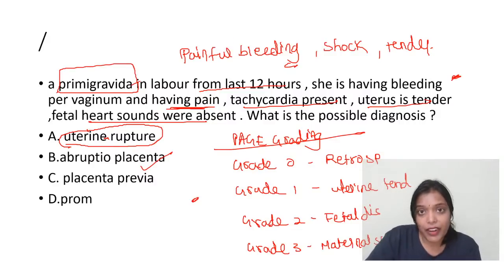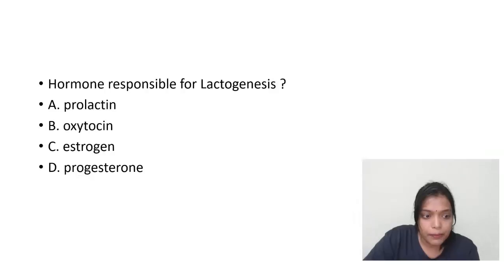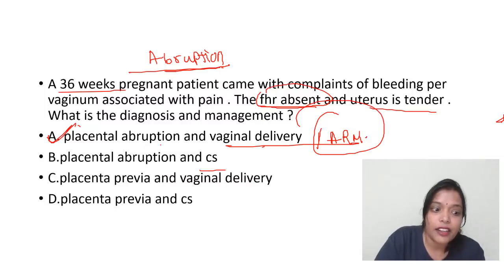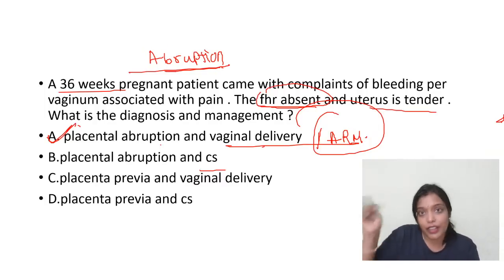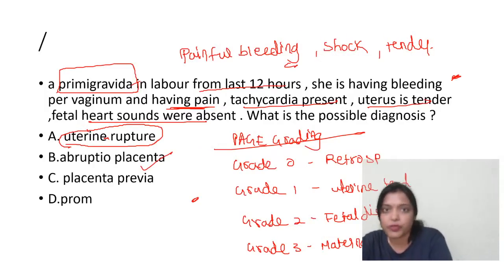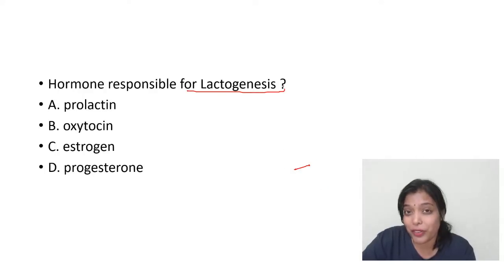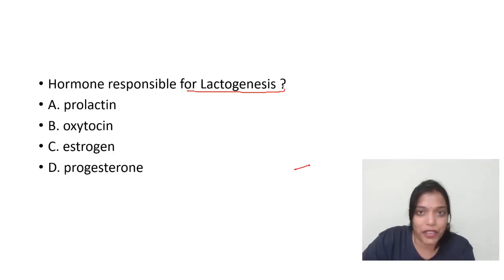These two questions were very similar. This question was a repeat from December 2019 — in 2019 the question was on uterine rupture, this year it was on abruption. I got around 40 questions from OBG — a huge number. Next topic: hormone responsible for lactogenesis.